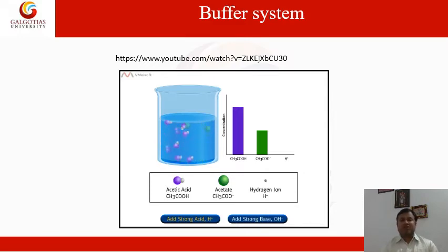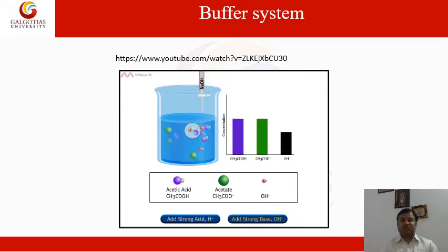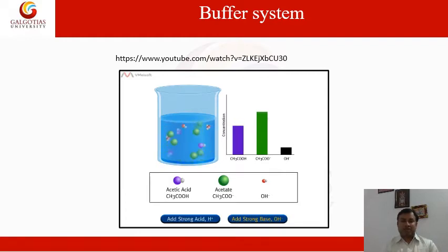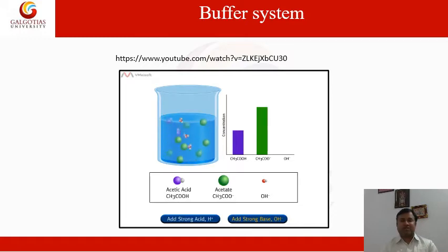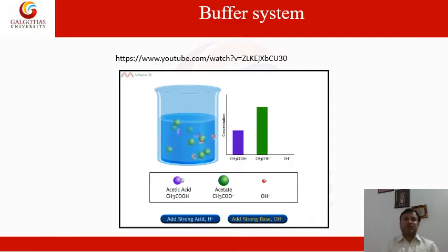When a strong base is added to the solution, hydroxide ion concentration increases. As a result, acetate concentration increases because the weak acid binds with sodium hydroxide and converts into sodium acetate. In this way, buffer solution resists the change caused by strong acid or strong base. This small clip shows the buffer capacity of the solution.